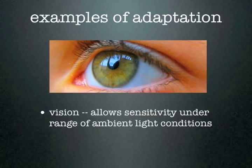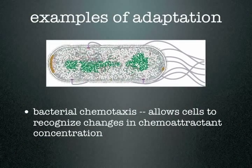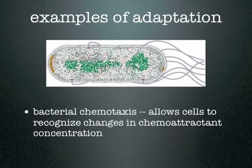Vision is an example of an adaptive sensory system. On a bright sunny day, when you first walk out, the big increase in light just overwhelms you and you can't see for a little bit. But after a short while, your eyes reset themselves so that you can now see under these new brighter ambient conditions. Bacterial chemotaxis is another classic example of sensory adaptation. By adapting to new ambient concentrations of chemoattractant, the bacterium can recognize further increases in the attractant, allowing the cell to continuously swim up a gradient.